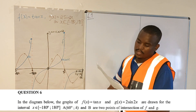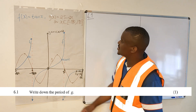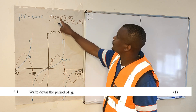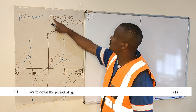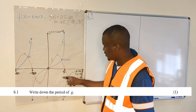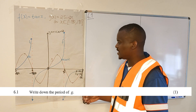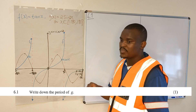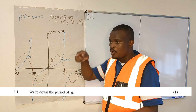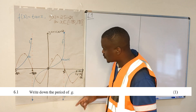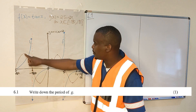6.1: Write down the period of g. Which function is g? G is this sine function here. So, what is the period of a function? A period of a function is the time it takes for one complete oscillation. How long does it take to complete the oscillation? Our function, we can say it starts here, goes up.